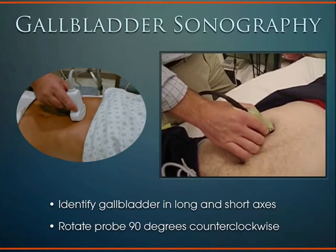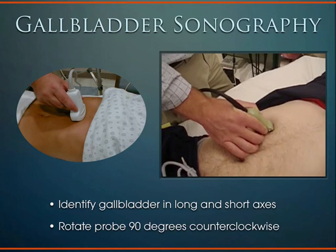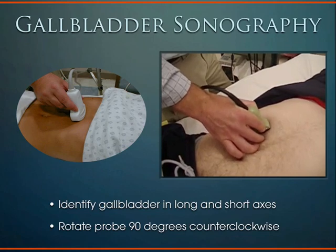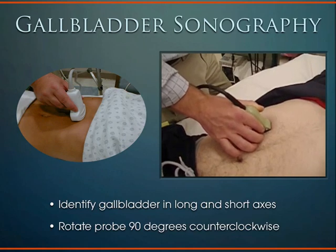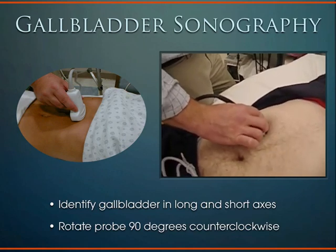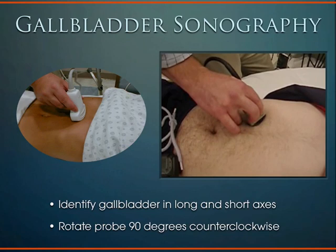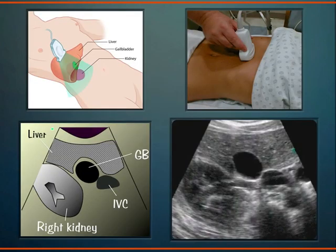Once you locate the gallbladder in the long axis, fan through it completely to look for pathology. Then rotate the probe 90 degrees to view it in the short axis and fan through it again. The fundamental principle of ultrasound is to view structures in two separate planes and recreate the 3D anatomy mentally — that's the key to all of ultrasound.